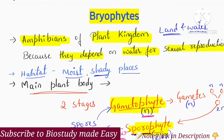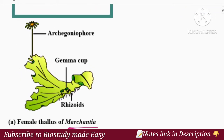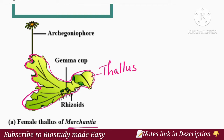The gametophyte is the main plant body and it is independent. The sporophyte is dependent on the gametophyte and carries out photosynthesis through it. The main plant body — the gametophyte — is called thallus. Thallus means there are no true roots, stems, or leaves.